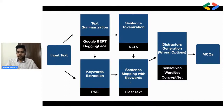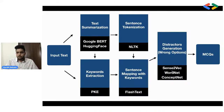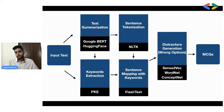The sentences generated from tokenization and the keywords extracted are sent for sentence mapping using FlashText. Once we get these sentences and their respective keywords, they are sent for distractor generation. Distractors are nothing but the wrong options we saw earlier. This can be done through three algorithms or models: Sense2Vec, WordNet, and ConceptNet. This is not a sequential pipeline — it's more like an option you choose to generate the distractors. These distractors end up forming the MCQ questions.